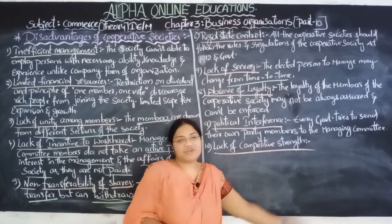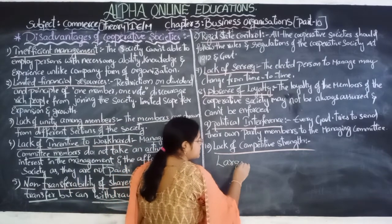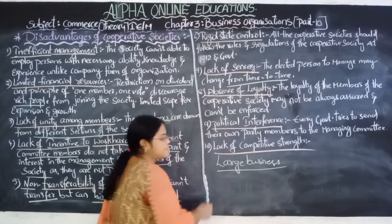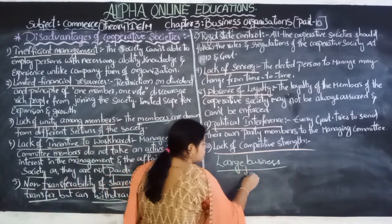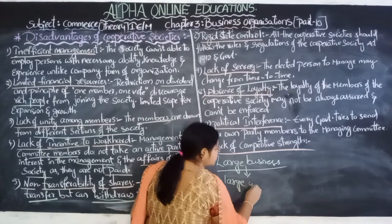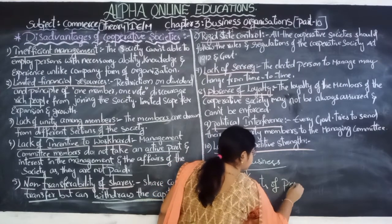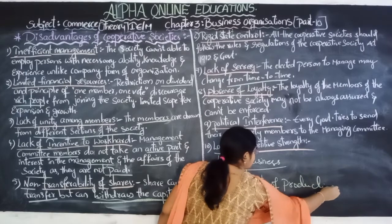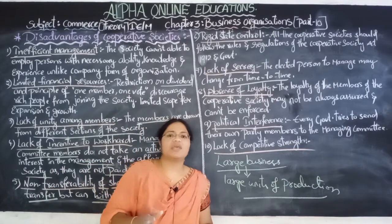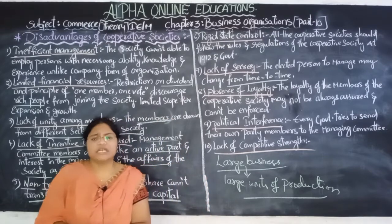The next disadvantage is lack of competitive strength. Cooperative societies cannot compete with large business organizations where production is very large. The production in large organizations is very high, so there is a lack of competitive strength. Competition is very difficult for cooperative societies when participating against other large business organizations.